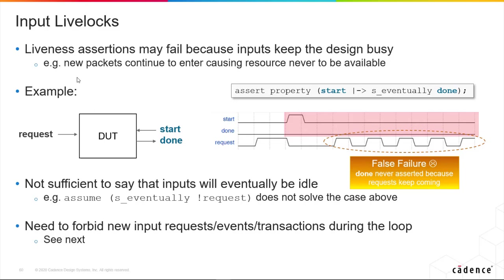Things like state machines: if there is some combination of input signals which will stop a state machine, and you write an assertion saying 'if I'm in state one, I always end up in state two,' that's going to fail because the design will just hold the inputs in a way that will stall your state machine.